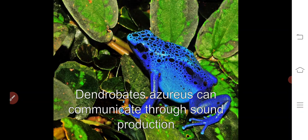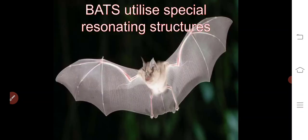Dendrobates can communicate through sound production, and bats utilize special resonating structures to enhance the sound. Animals such as katydids, frogs, bats, and howler monkeys have specialized resonating structures attached to their sound producing organs that select the radiated frequencies and couple the sounds to the medium.